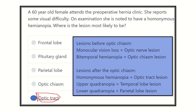Here are some important notes to memorize: Monocular vision loss — total blindness in one eye — occurs with optic nerve lesion. Bitemporal hemianopia occurs with optic chiasmatic lesion. Homonymous hemianopia occurs with optic tract or optic radiation lesion. Upper quadrantanopia occurs with temporal lobe lesion. Lower quadrantanopia occurs with parietal lobe lesion. These are very important facts for the exam.